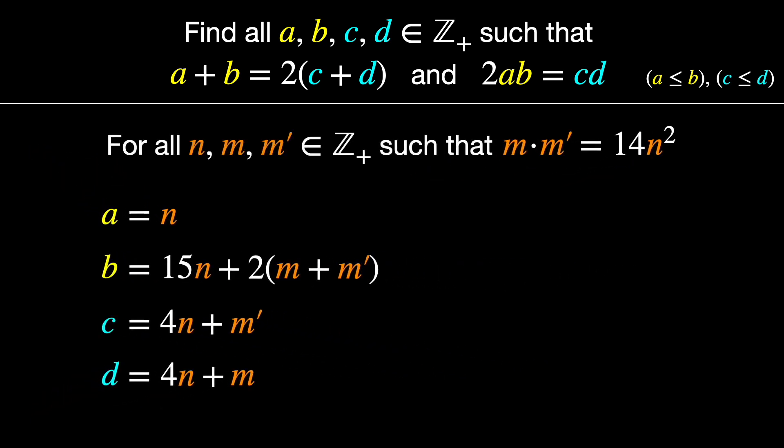For all positive integers N, M, and M prime, such that M times M prime equals 14N squared, we have A equals N, B equals 15N plus twice the sum of the two factors, and C and D are both 4N plus one of the factors. How cool is that?